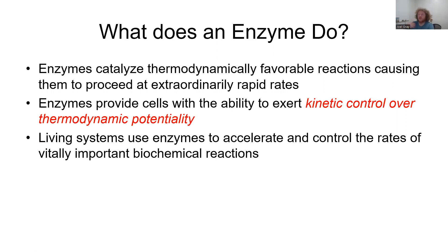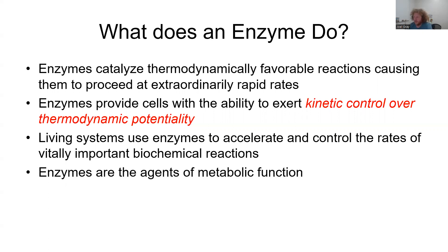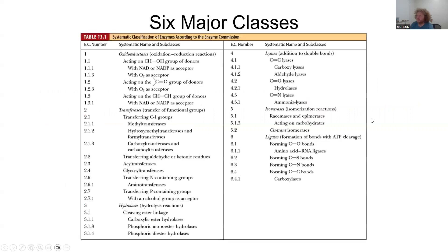Living systems use enzymes to accelerate and control the rates of vitally important biochemical reactions — whether to speed up a reaction or to halt a reaction in its place. Enzymes are the agents of metabolic function, and like with amino acids, classification is very important for organizing information. Enzymes are really no different in that regard.